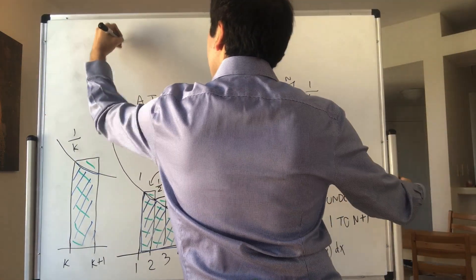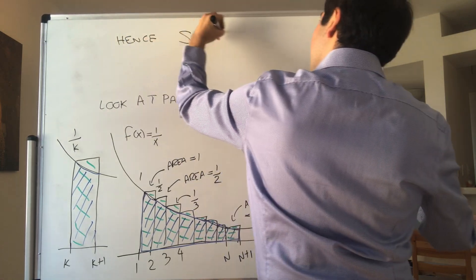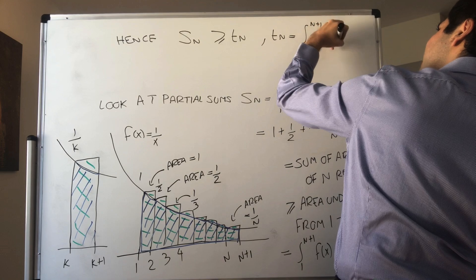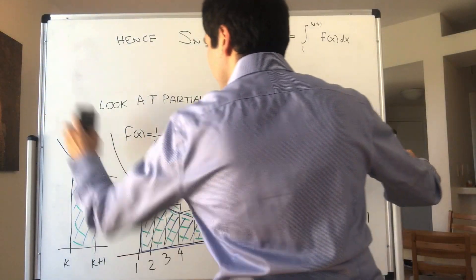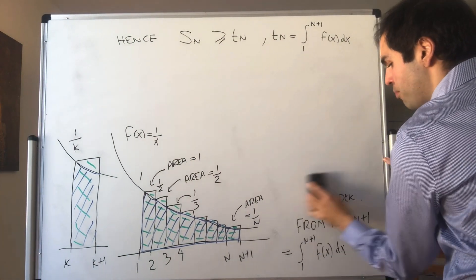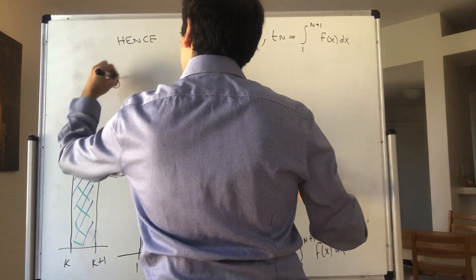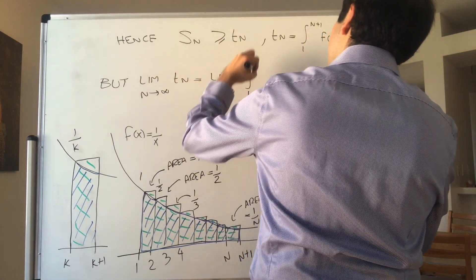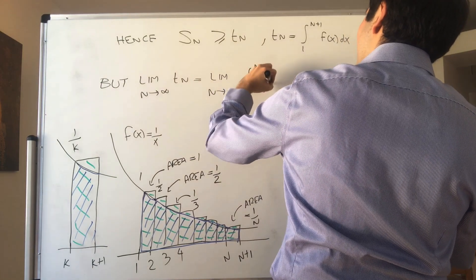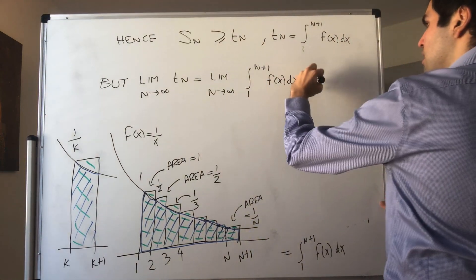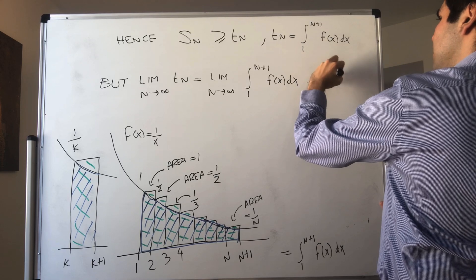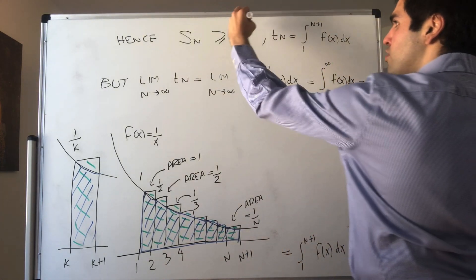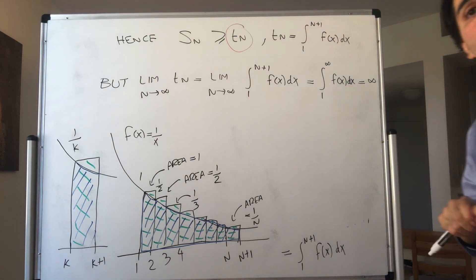So S_n is greater or equal to T_n, where T_n is just the integral from 1 to n plus 1 of f of x dx. The limit as n goes to infinity of T_n is just the improper integral — the limit as n goes to infinity of the integral from 1 to n plus 1 of f of x dx — which becomes the integral from 1 to infinity of f of x dx. By assumption, we know this is infinity. Therefore the smaller sequence goes to infinity, so the bigger sequence goes to infinity as well.